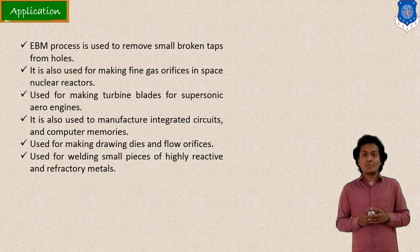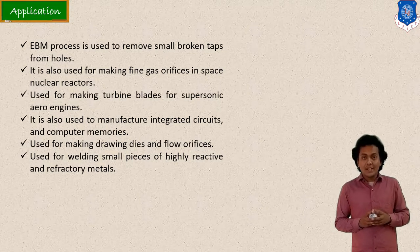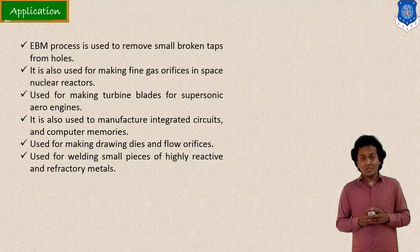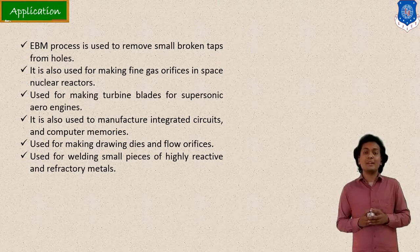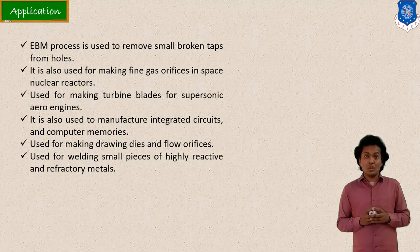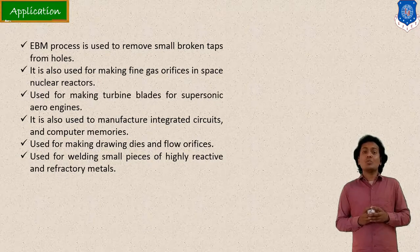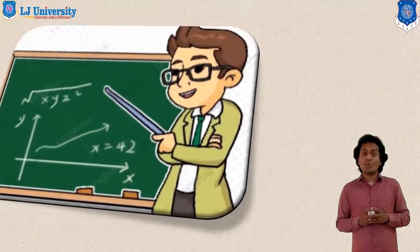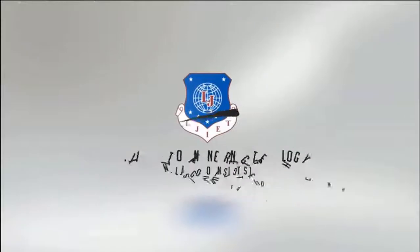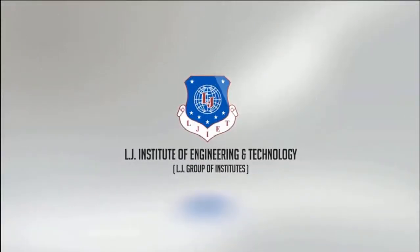The main applications of electron beam machining include drilling operations, turbine blades, and aerospace industries. It can also be used for embedded circuits or electronic circuits. This is all about electron beam machining, which is a process under the category of thermal energy involved. Thank you all.